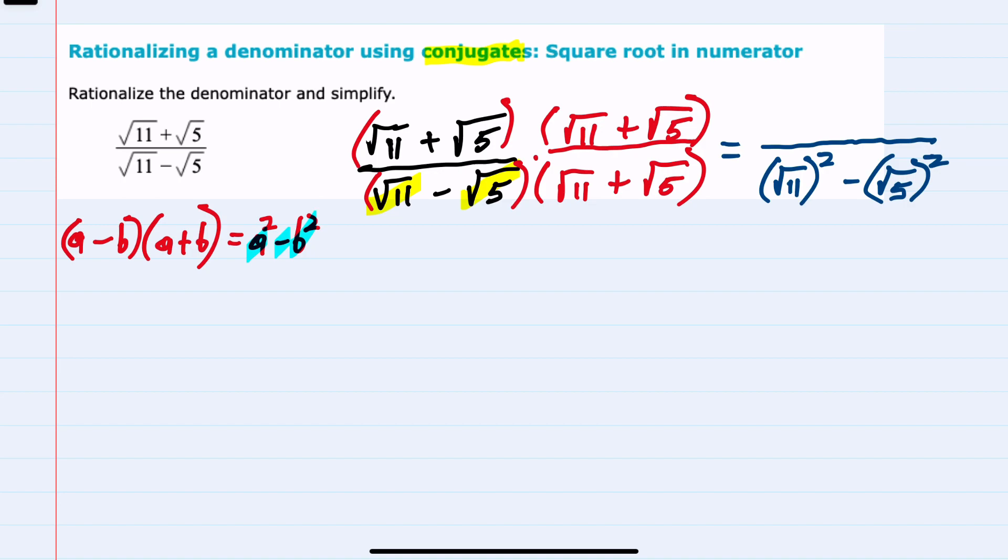And since we have these square roots squared, in the next step I'll simplify, and that will remove the radicals from the denominator. But first, in this numerator, to distribute out here or FOIL, we would need to multiply the square root of 11 times the square root of 11, which is the square root of 121, or just 11.